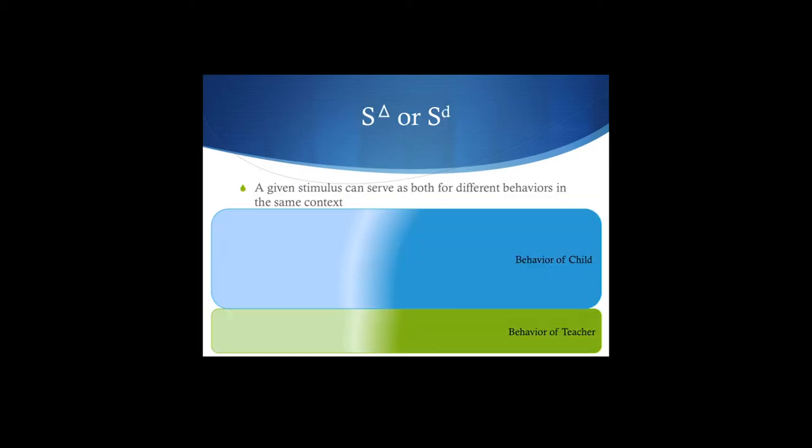So let's look at how this stuff interacts in multiple situations here. We're going to look at both S^ds and S-deltas, and we're going to look at two different behaviors to see that sort of interaction between the behavior manager and the person that's having their behavior managed. The idea is that the behavior manager also is getting reinforced and punished for what they're doing. So let's take a look at it here. You've got the behavior of the child and the behavior of the teacher. We're going to focus on the child first.